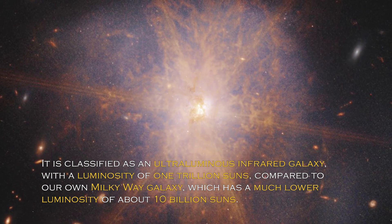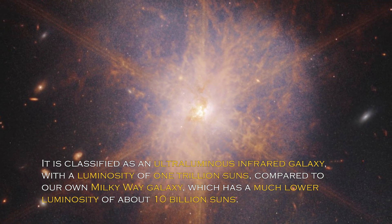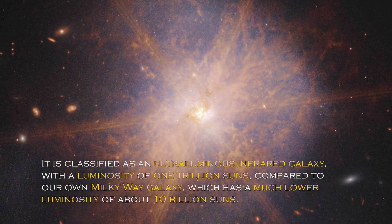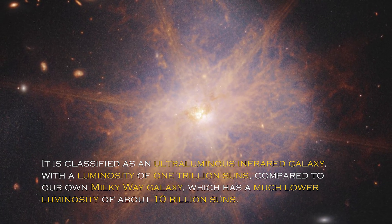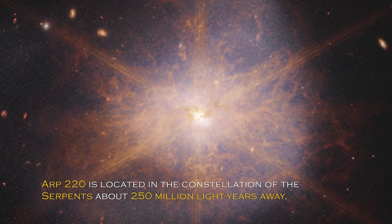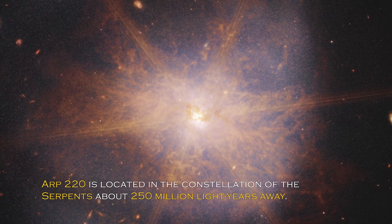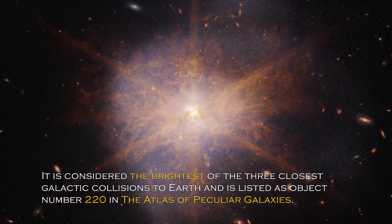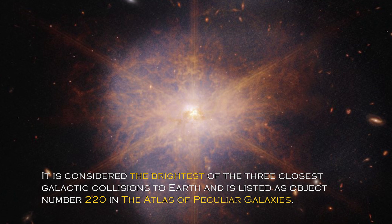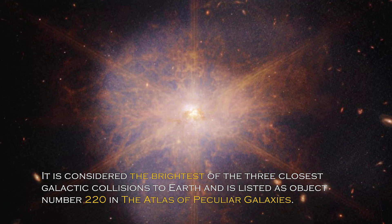It is classified as an ultra-luminous infrared galaxy, with a luminosity of trillion suns compared to our own galaxy, the Milky Way, which has much lower luminosity of about 10 billion suns. ARP 220 is located in the constellation of the Serpents, about 250 million light-years away. It is considered the brightest of the three closest galactic collisions to Earth, and it is listed as object number 220 in the Atlas of Peculiar Galaxies.